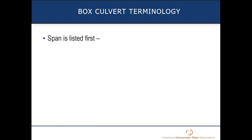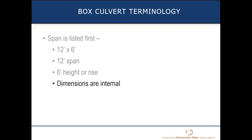When we look at box culvert terminology, the span is always listed first. If an engineer says we need a 12 by 6 box, a 12 by 6 means 12 foot span and 6 foot rise or height. These dimensions are always internal. So that's the terminology and nomenclature you use.